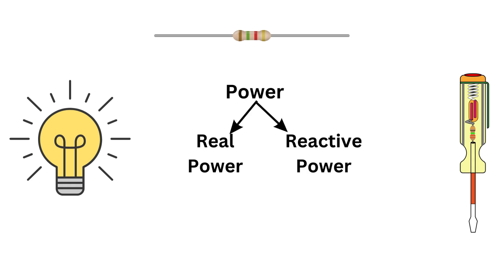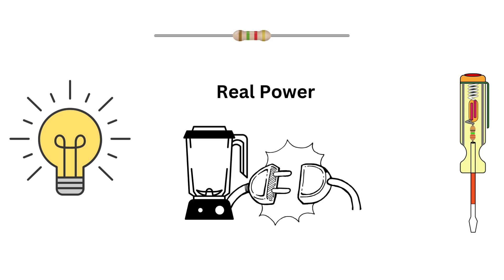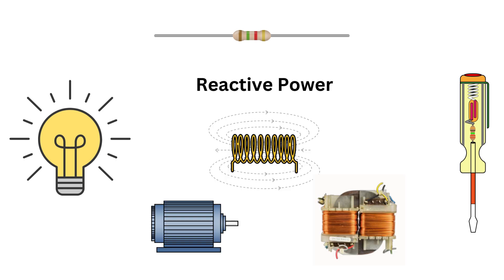When we talk about power, we often think of it in two main ways: real power and reactive power. Real power is the actual power that does useful work, like blending that smoothie. Reactive power, on the other hand, is like the energy that goes into creating the magnetic fields in motors or transformers...